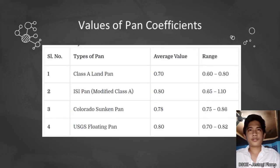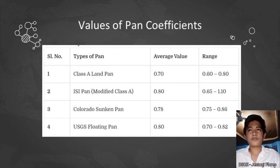The pan coefficient values are as follows: the Class A land pan has an average value of 0.70 with a range of 0.60 to 0.80. The ISI pan (modified Class A) has an average value of 0.80 with a range of 0.65 to 1.10. The Colorado sunken pan has an average value of 0.78 with a range of 0.75 to 0.86. The USGS floating pan has a range of 0.70 to 0.82.